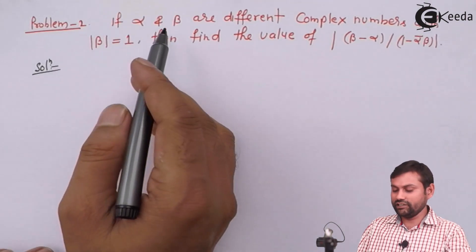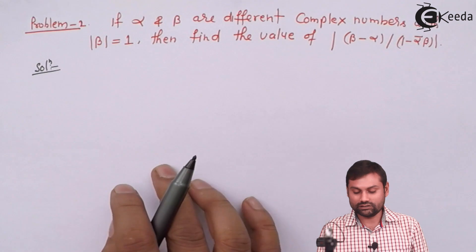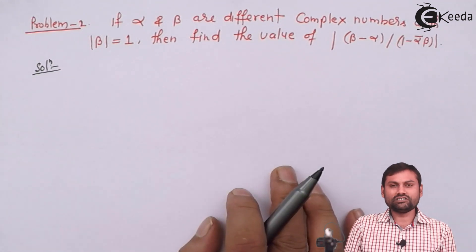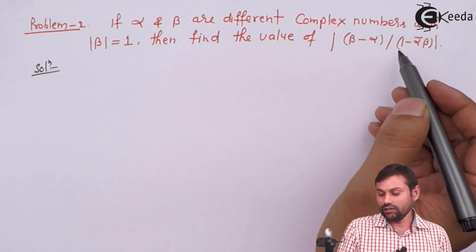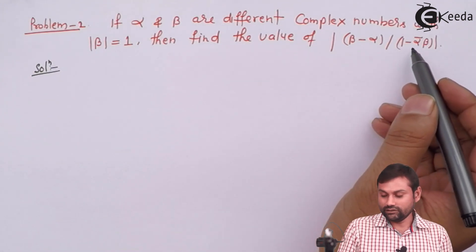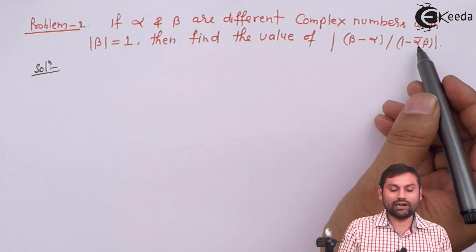The question given is: if α and β are different complex numbers with modulus of β equals 1, then find the value of |(β - α)/(1 - ᾱβ)|.